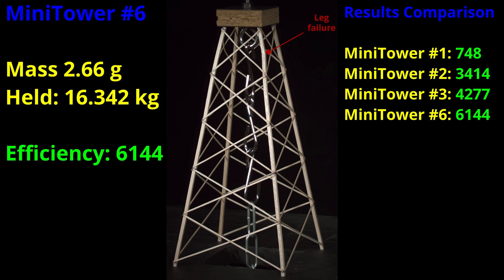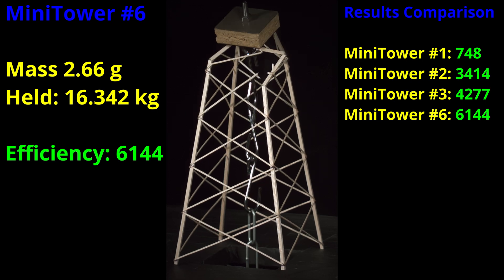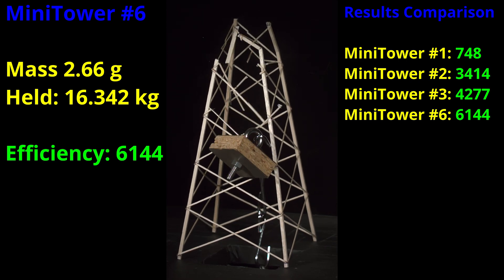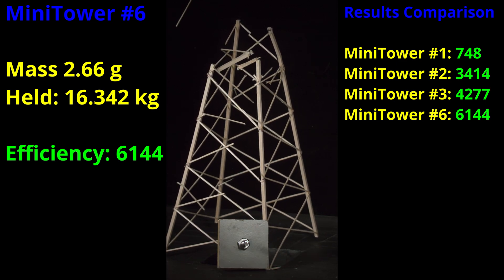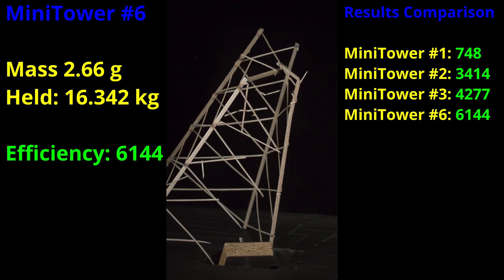If we are happy with holding 16.3 kg, we could keep the same legs and go with lighter cross members or even reduce the number. If for some reason we wanted to hold more weight, we could just increase the leg density as the cross bracing is not the weakest link anymore. For the next build, I'm going to reduce the number of cross members down to 3 layers or instead of 5 cm vertical spacing, it will be 8.33 cm.